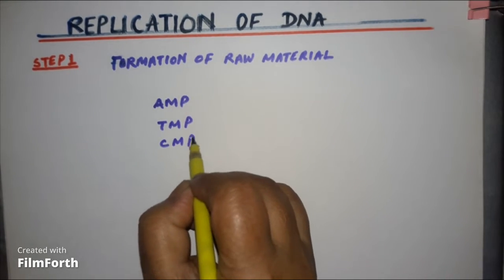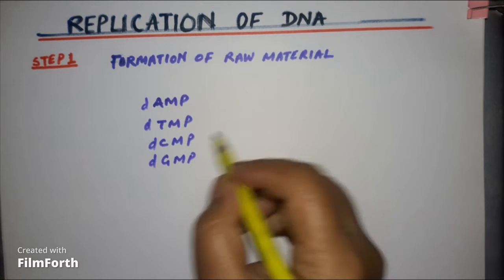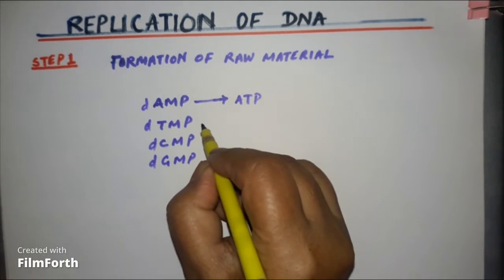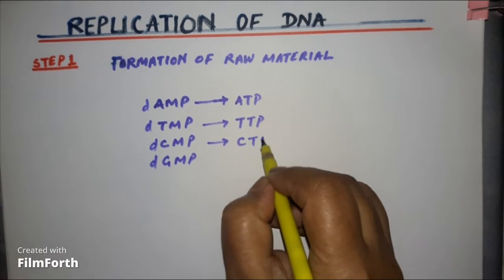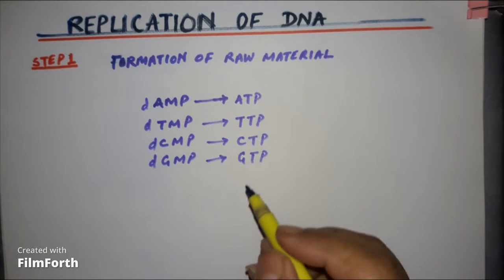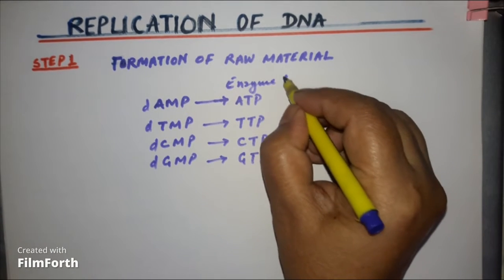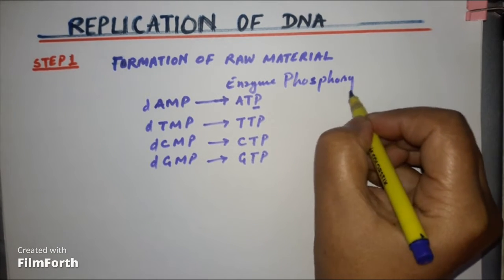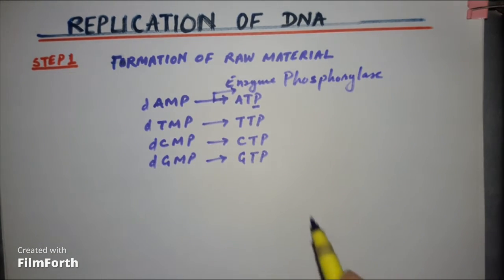Cytidine monophosphate and guanosine monophosphate of DNA, they are the raw material. Now these nucleotides, they will be first converted into ATP, TTP, any triphosphates, so that they become energy rich molecules. Now these triphosphates, what catalyzes this? The enzyme for this process is phosphorylase. Phosphorylation, phosphate bond formation. So phosphorylation, phosphorylase is the enzyme.